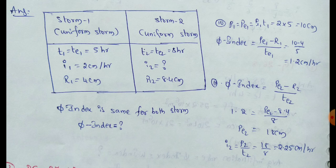Two storms are uniform. The first storm is T1, where T1 equals TE1 equals 5 hours. The first storm duration is 5 hours, meaning the intensity of rainfall is 2 cm per hour. That means runoff is 4 cm.